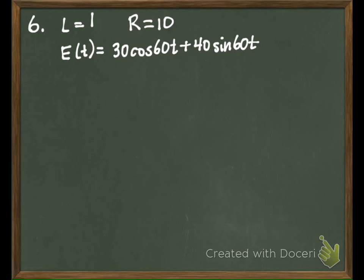So in this case, they don't mention Q at all. So we make the assumption that there is no charge on the circuit at this time. So since Q is not mentioned, we're going to assume that the charge is 0.